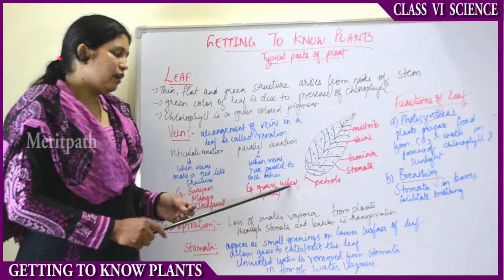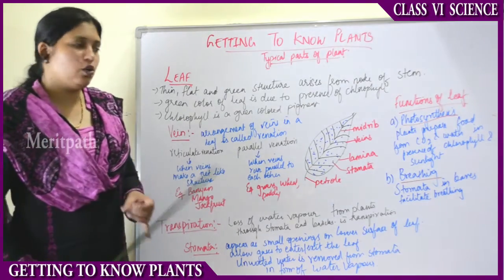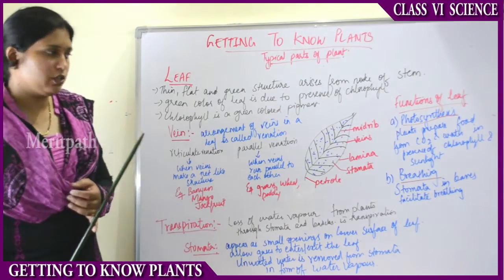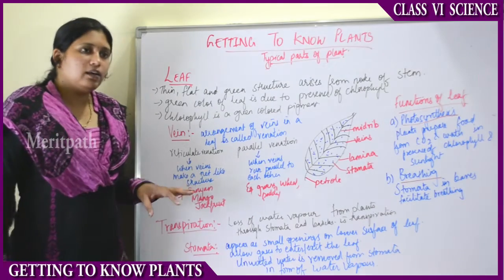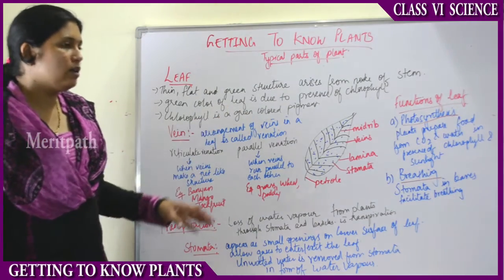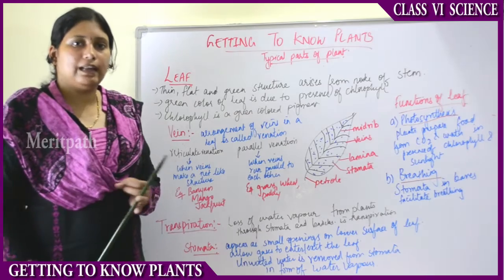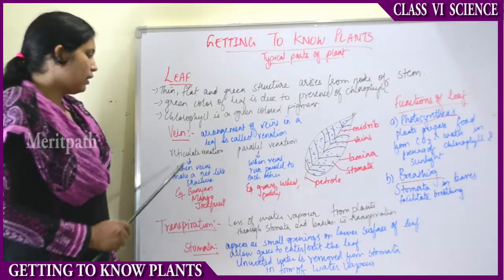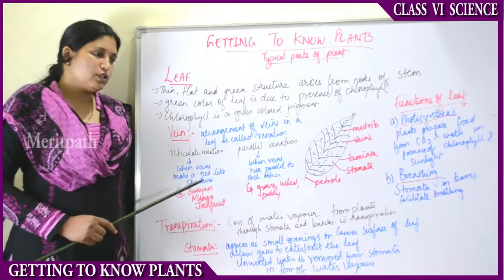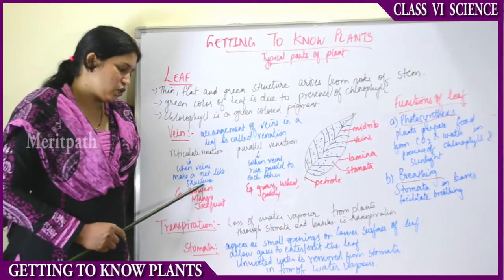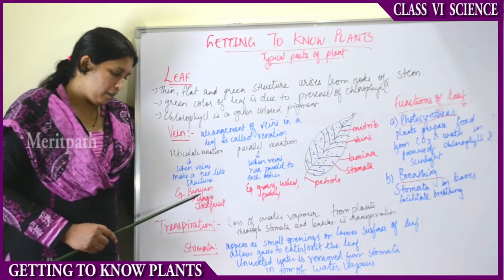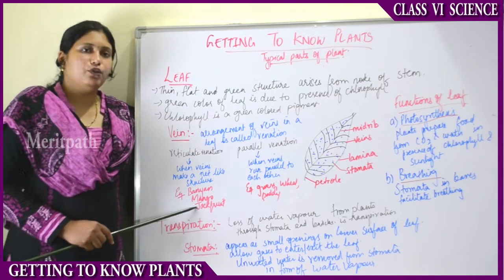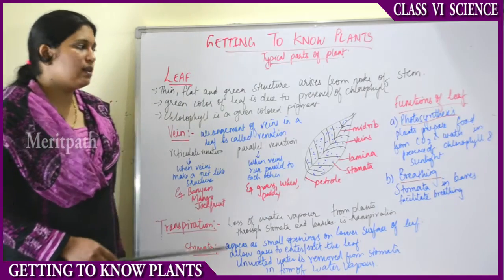Wheat and rice plants also have leaves with veins in a parallel venation direction. In reticulate venation, the veins of the leaves form a network or net-like structure — closely woven like a net. This can be seen in banyan, mango, and jackfruit plants.